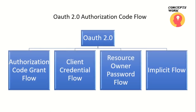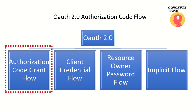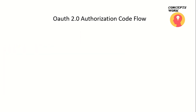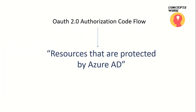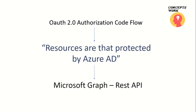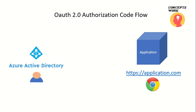In OAuth 2.0 there are four different types of flows: authorization code grant flow, client credential flow, resource owner password flow, and implicit flow. In this video we are going to talk about authorization code grant flow. OAuth 2.0 and OpenID Connect both separate the authorization layer from the authentication layer, and are used to access resources protected by Azure AD — in our case, Microsoft Graph.